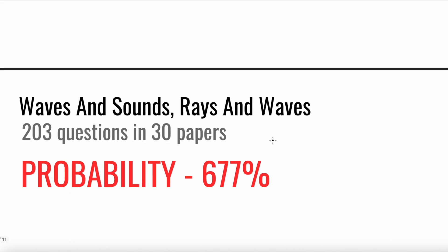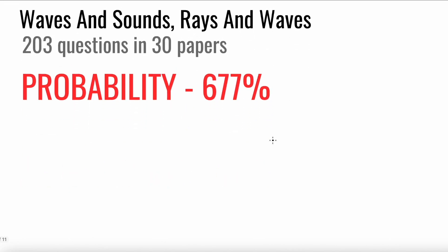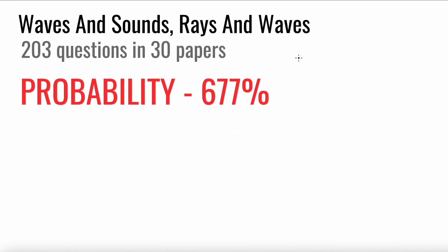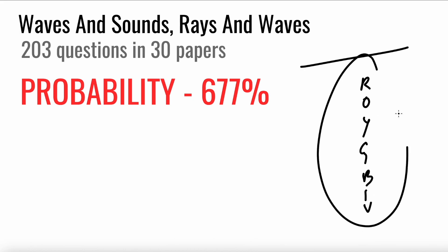Next we have Waves and Sound. This covers reflection, refraction, and diffraction type questions. You also need to remember ROYGBIV for dispersion. Around seven questions are expected on this topic, and it is usually tested towards the end of the paper.